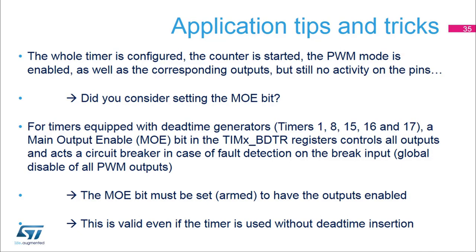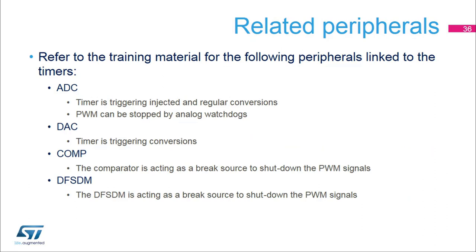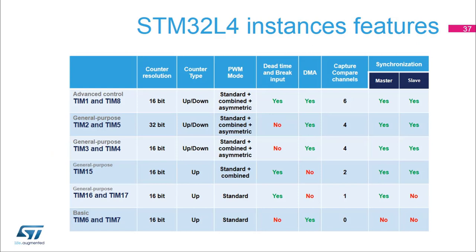The timer is linked with multiple on-chip peripherals. It serves as a trigger source for the ADC and the DAC converter. It also receives signals from the ADC's analog watchdog, the comparator, or the DF-SDM filter that can be used to shut down PWM signals. This slide lists the timer instances present in the STM32L4. Timers 1 and 8 are full-featured motor control capable timers, including all PWM options and six compare channels for simultaneously generating three-phase PWM signals and two independent ADC triggers. Timers 2, 3, and 4 are general purpose timers including all PWM modes, up-down counting capability, and four channels. Timers 2 and 5 additionally offer 32-bit counting range.